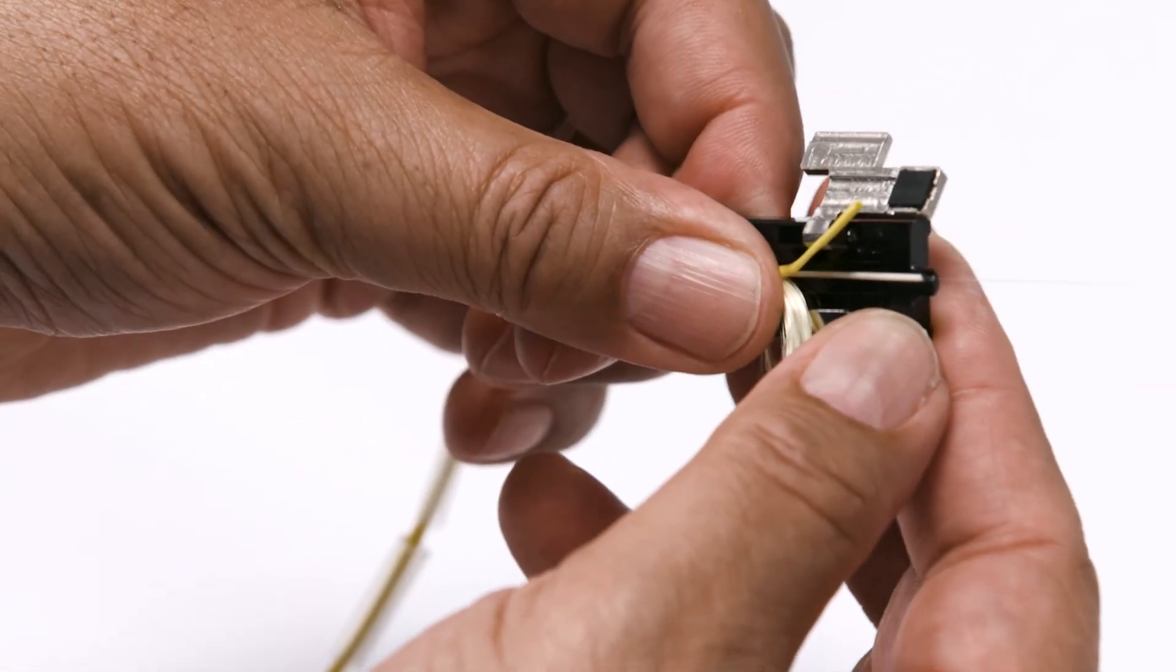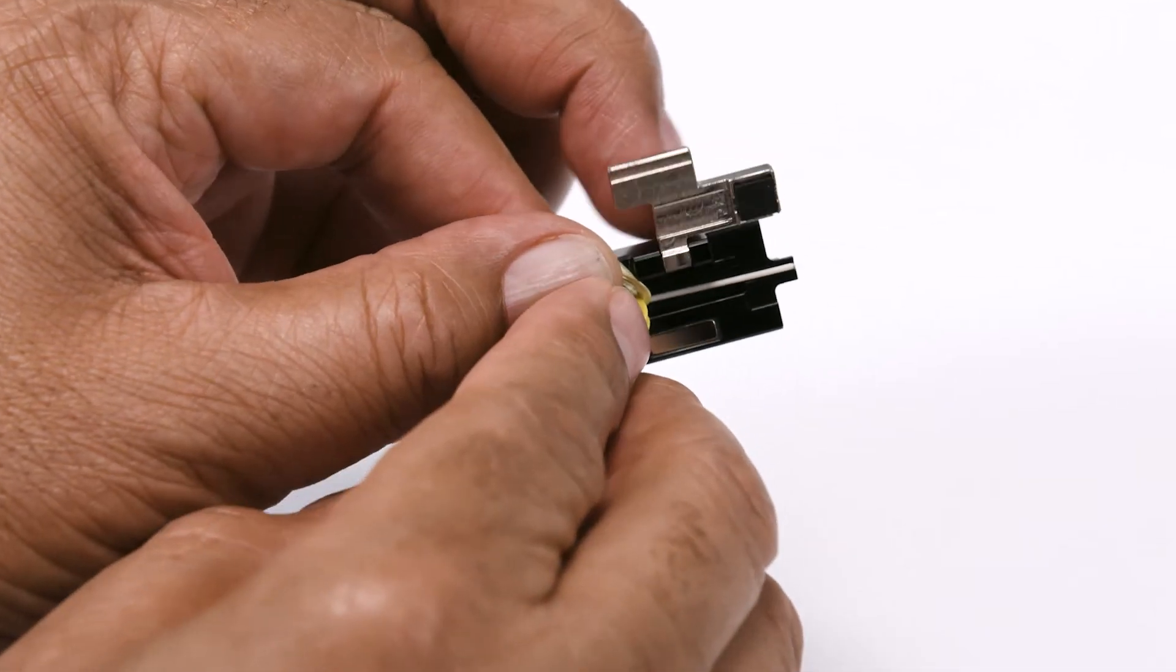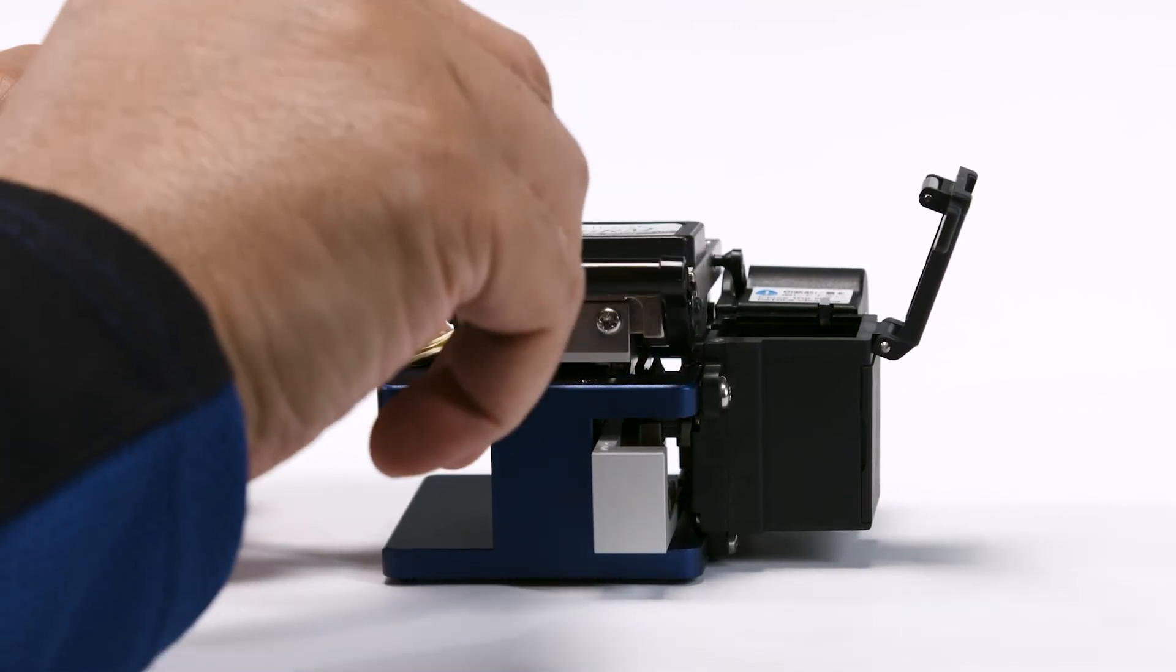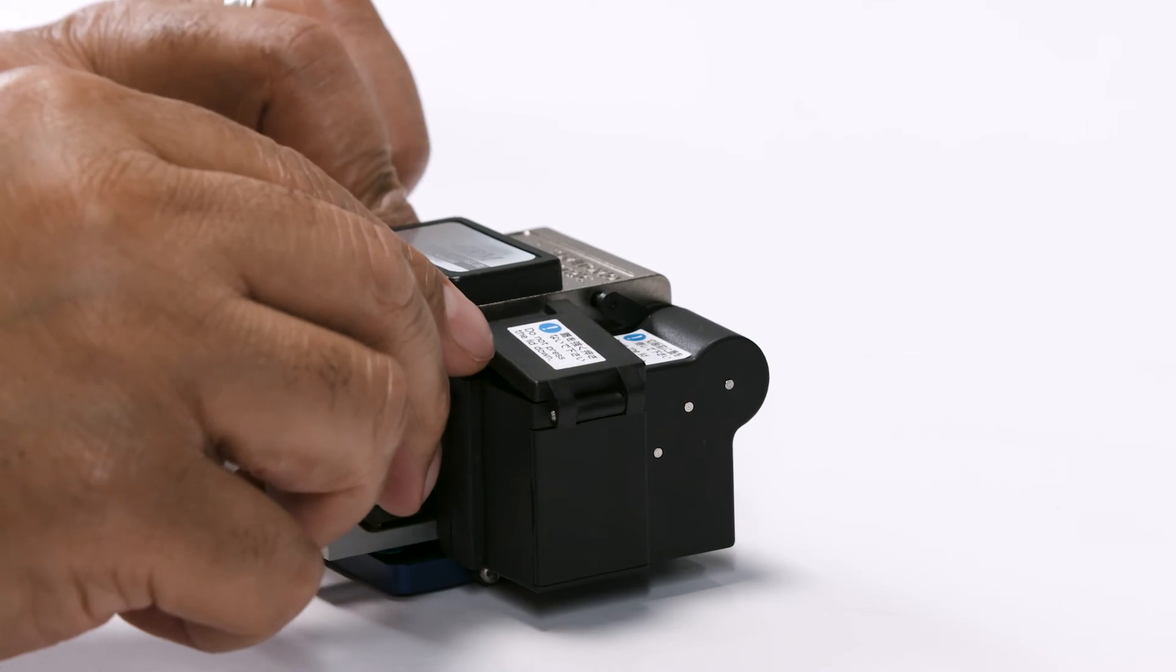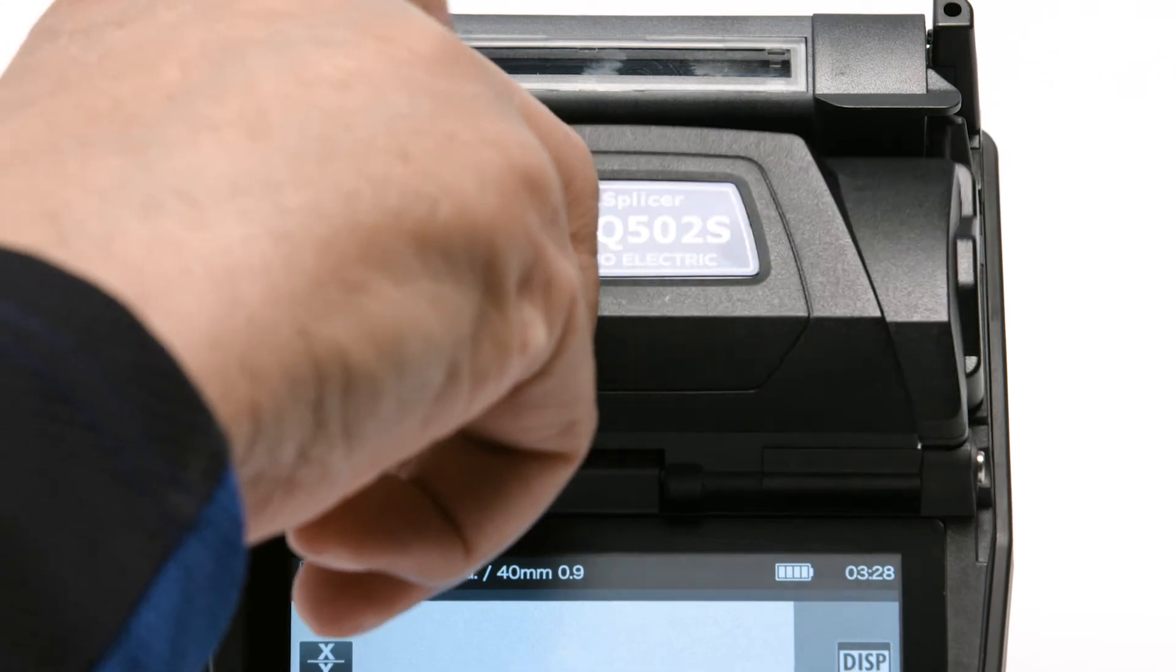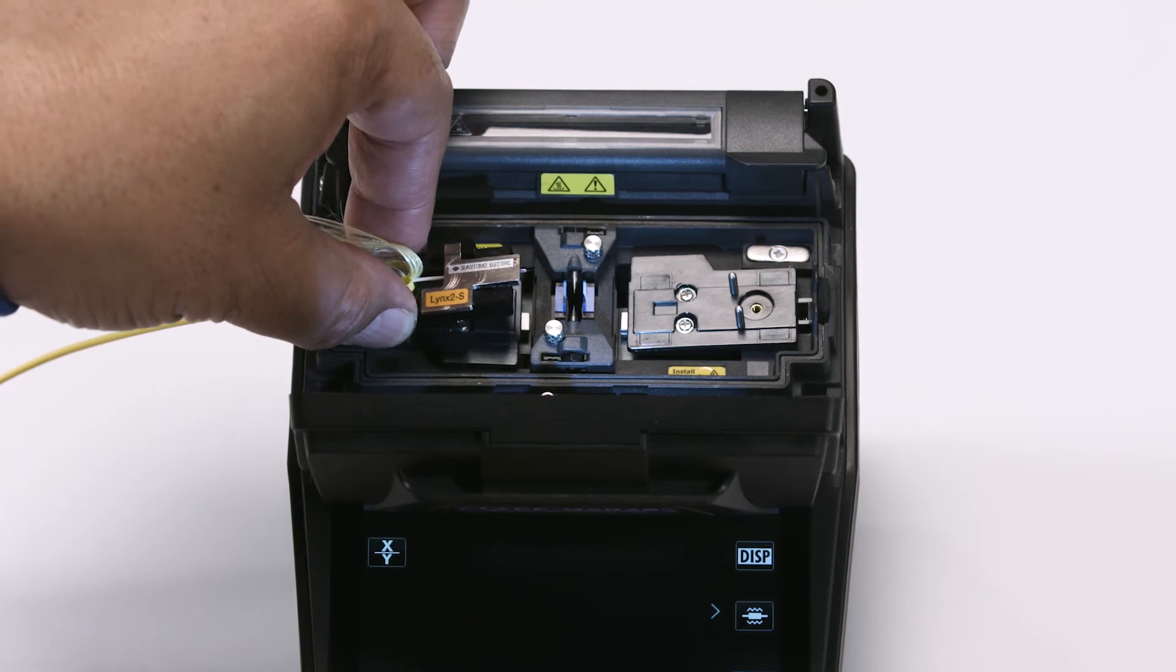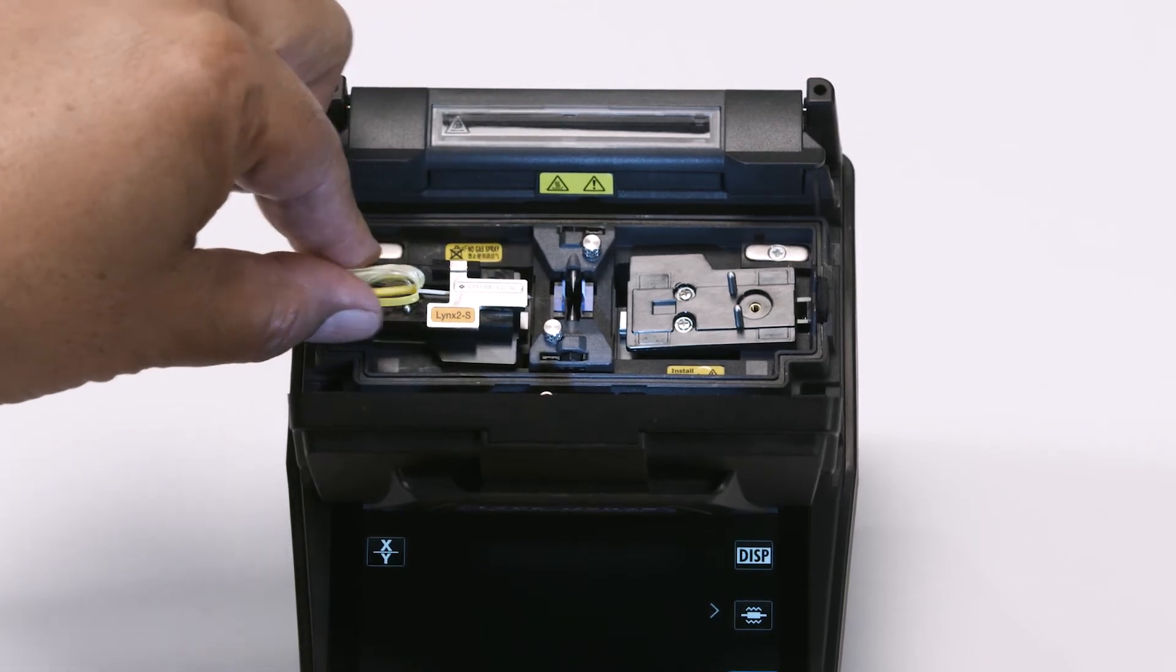Placing the fiber into a holder, and then cleaving the fiber. Prepared fiber should be immediately placed into the fusion splicer to keep the fiber from collecting dust or incurring damage.